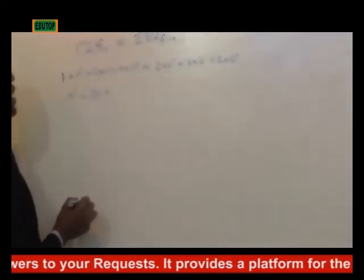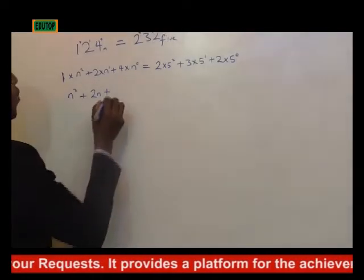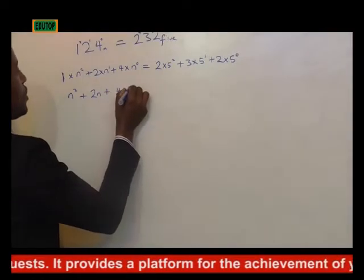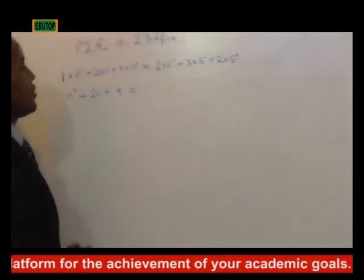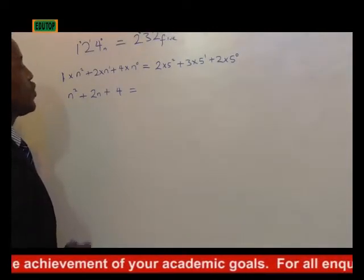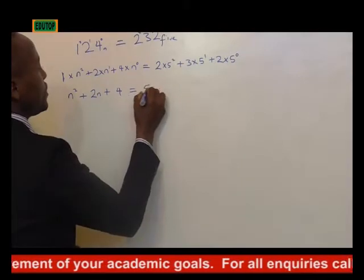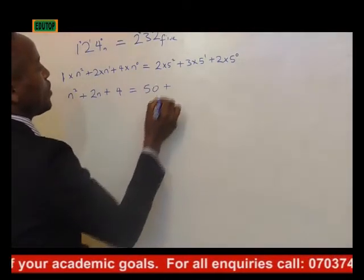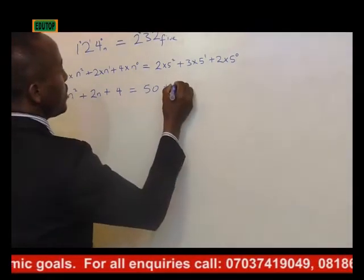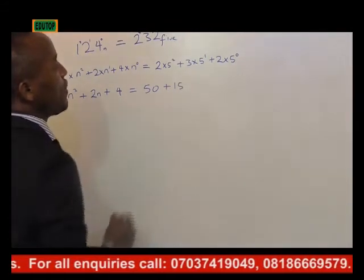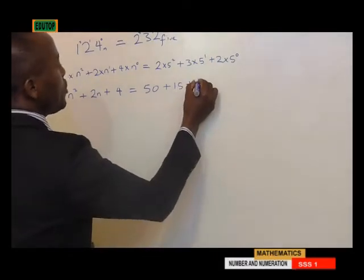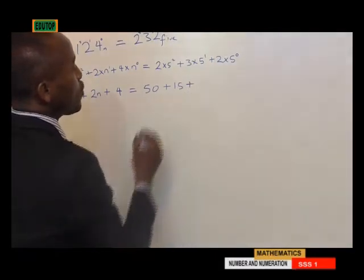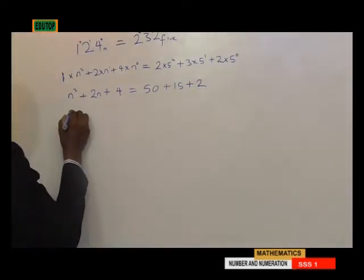n raised to the power of 0 is 1, so 4 times 1 is 4. On the right hand side, 5 raised to the power of 2 is 25, times 2 is 50. Plus 5 raised to the power of 1 is 5, and 3 times 5 is 15. 5 raised to the power of 0 is 1, and 2 times 1 is 2.